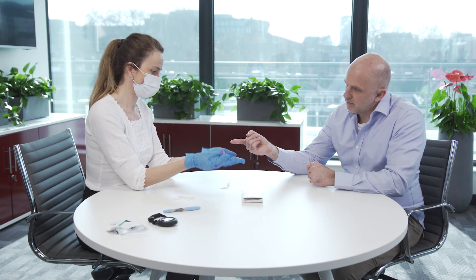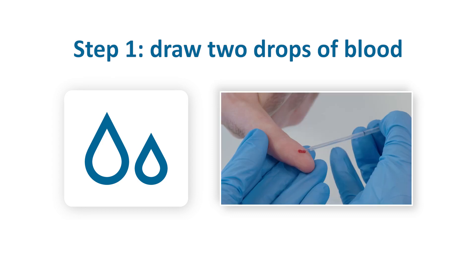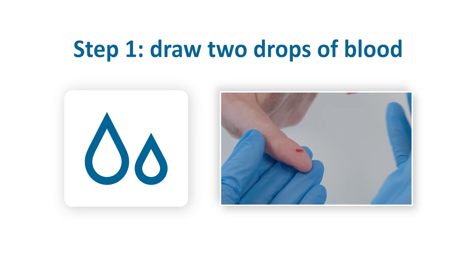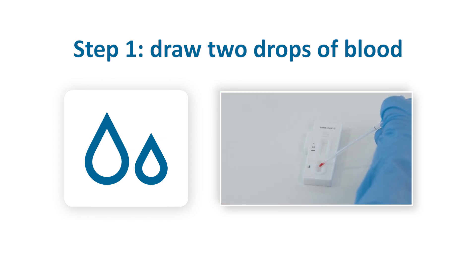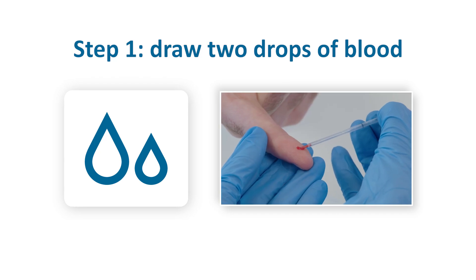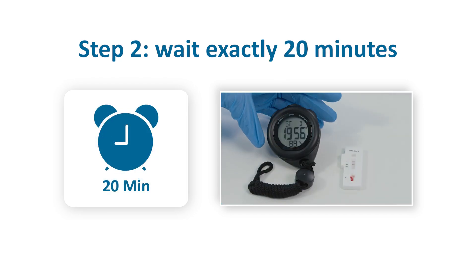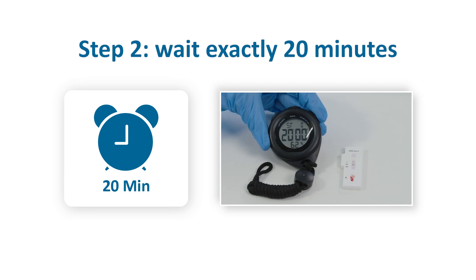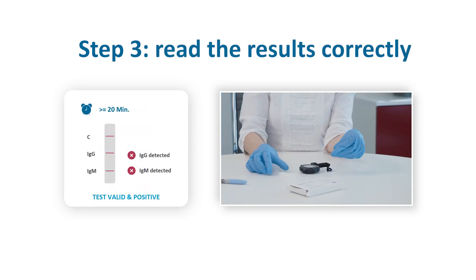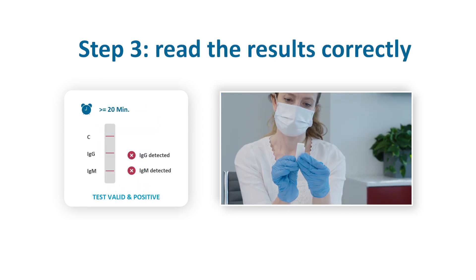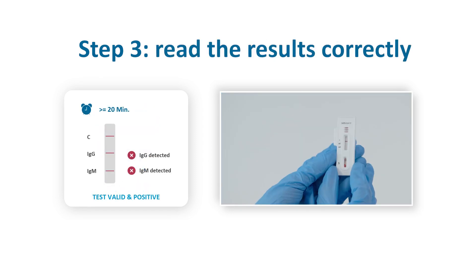Remember the key points to conducting a successful test: 1. Ensure you collect enough blood — 2 drops, 50 microlitres — from the subject's fingertip and apply to the test cassette. 2. Wait exactly 20 minutes to read the test, no earlier, no later. 3. Read the result correctly — even a faint line at either IgM or IgG indicates infection.